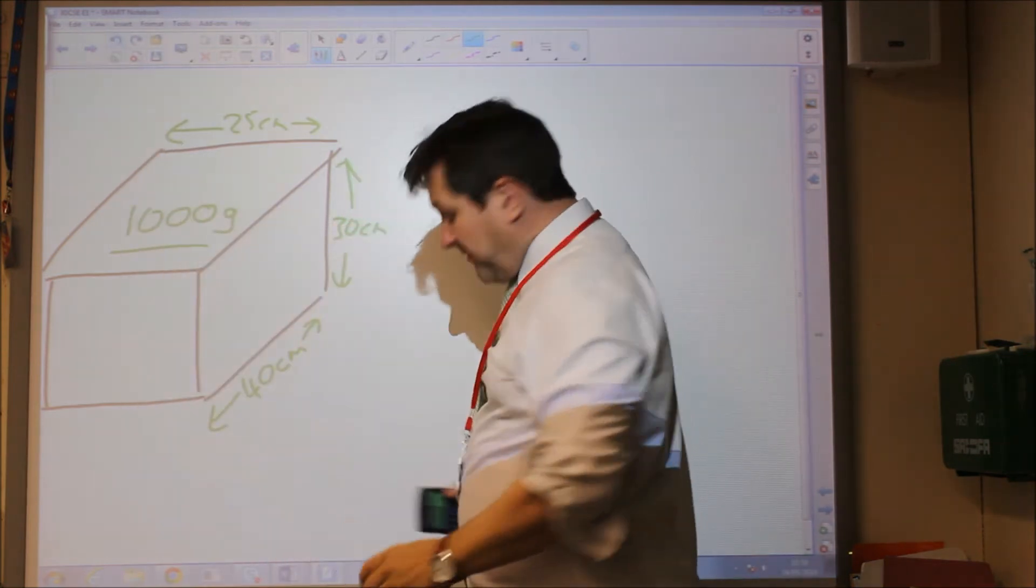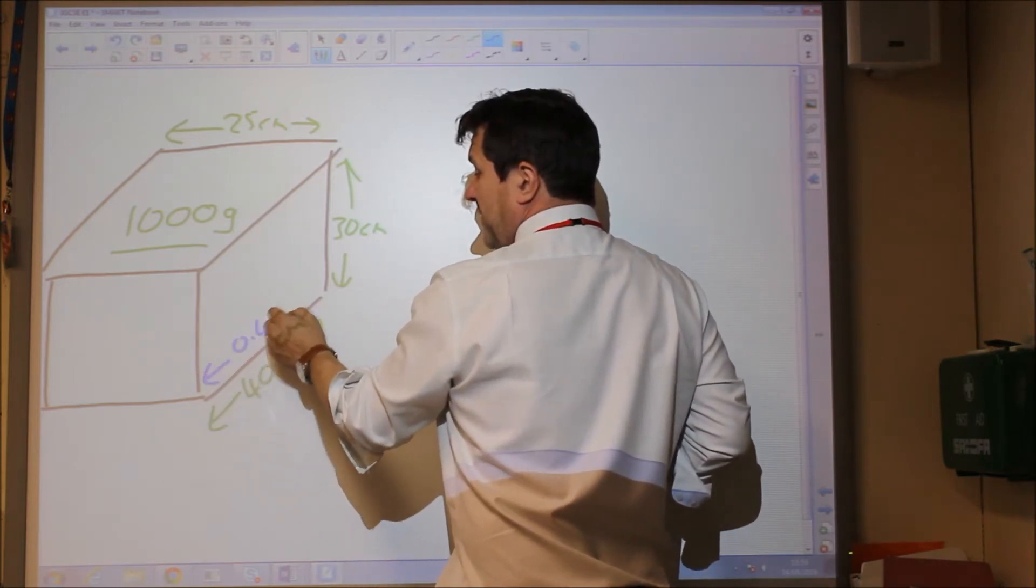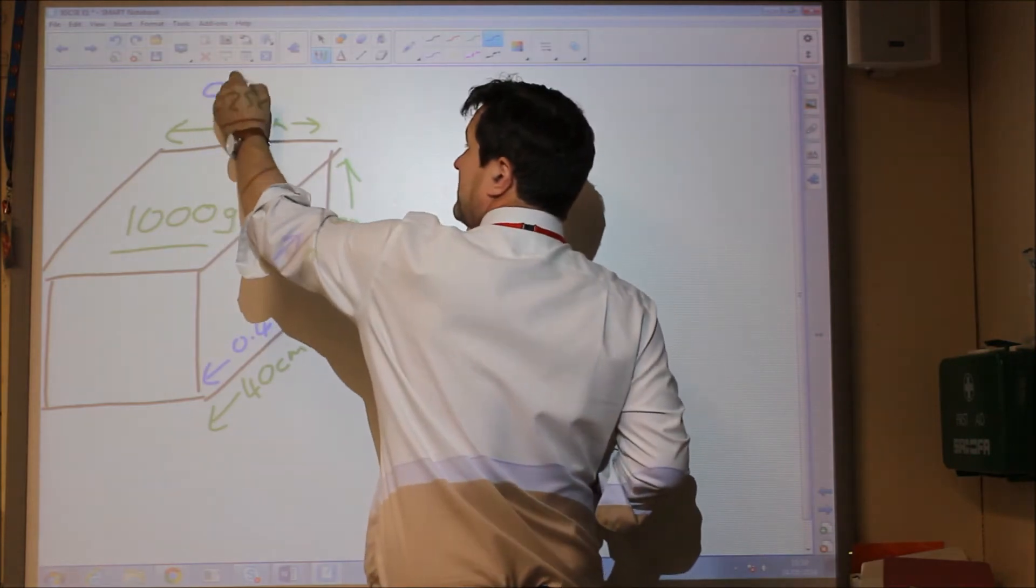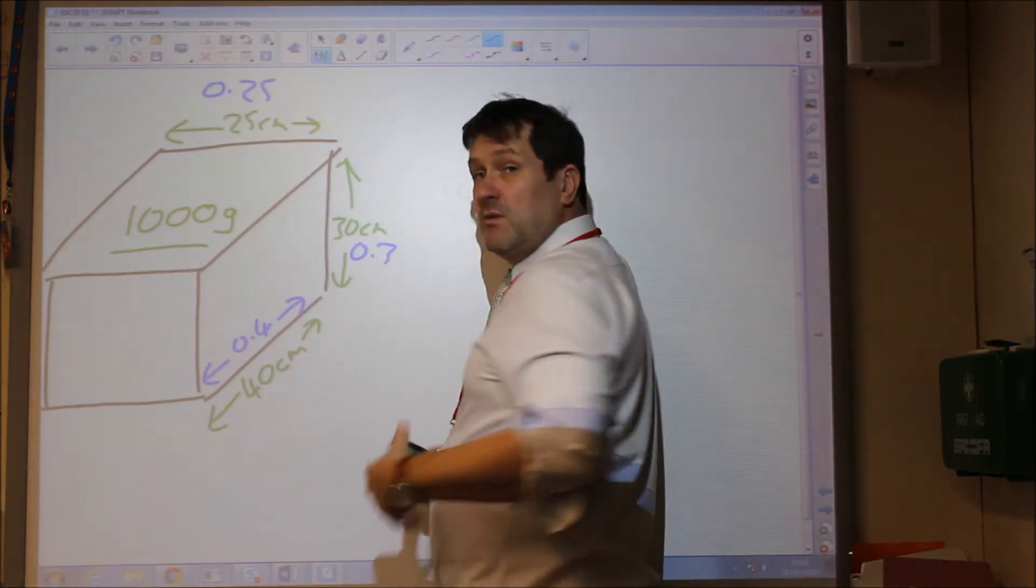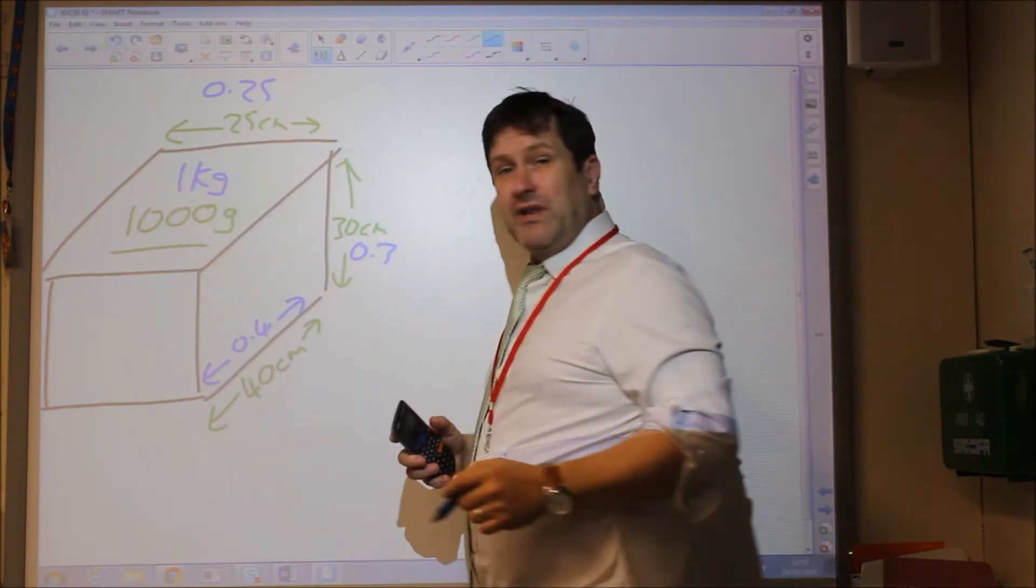So this time we would convert everything into metres. Obviously, this is 0.4 metres, this is 0.3 metres, and this is 0.25 metres. We now need to make sure everything is in kilograms. This is obviously 1 kilogram.